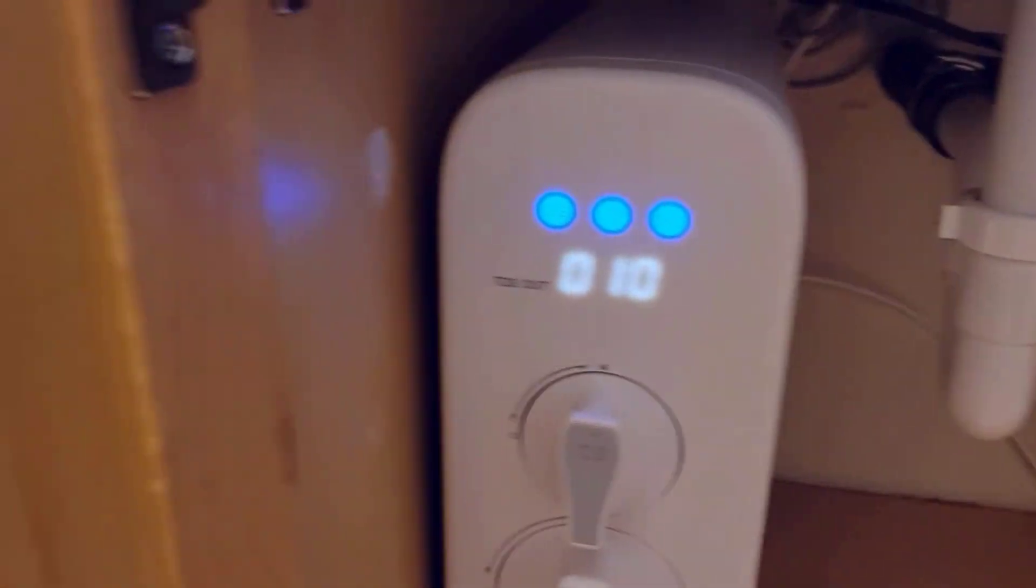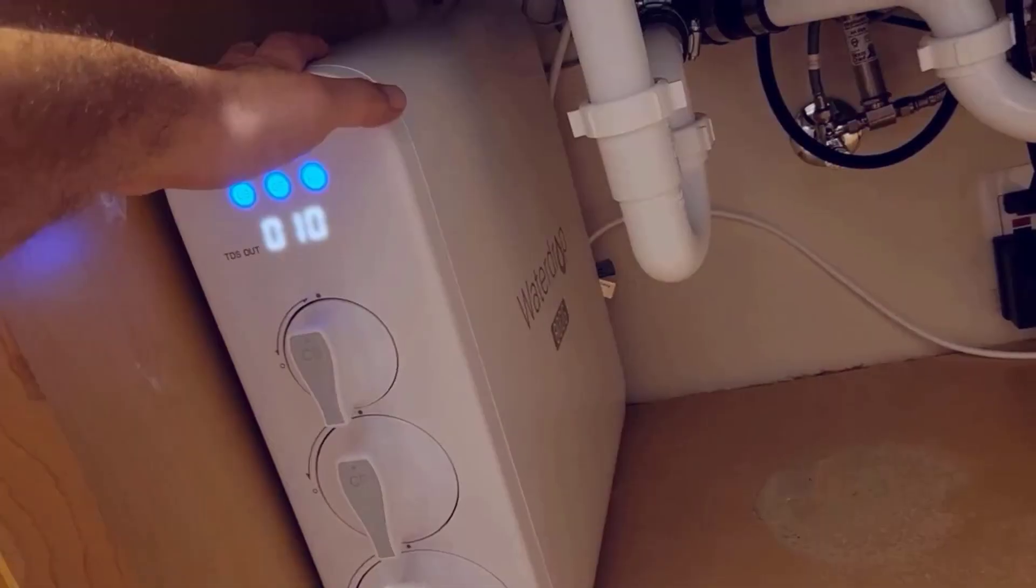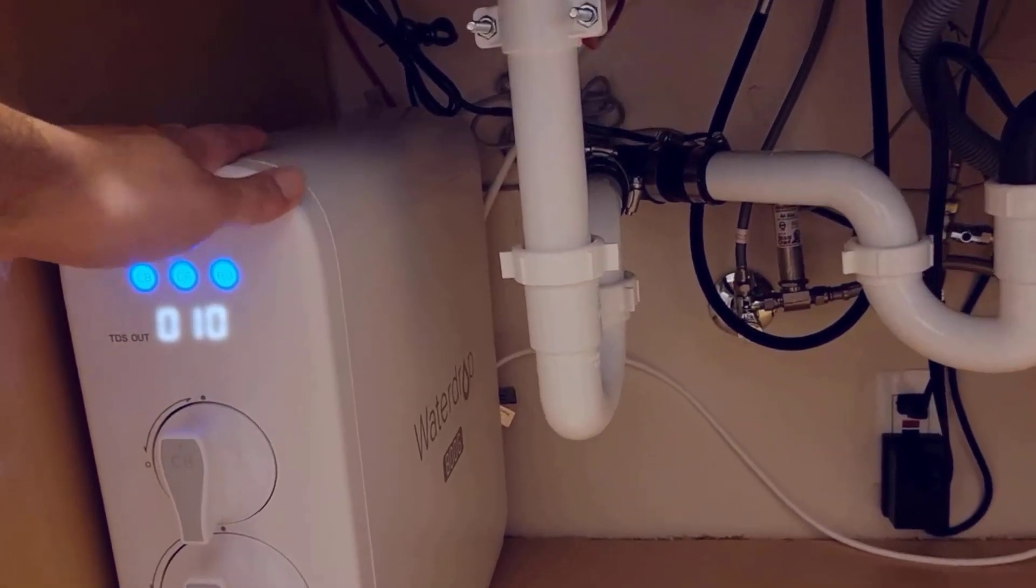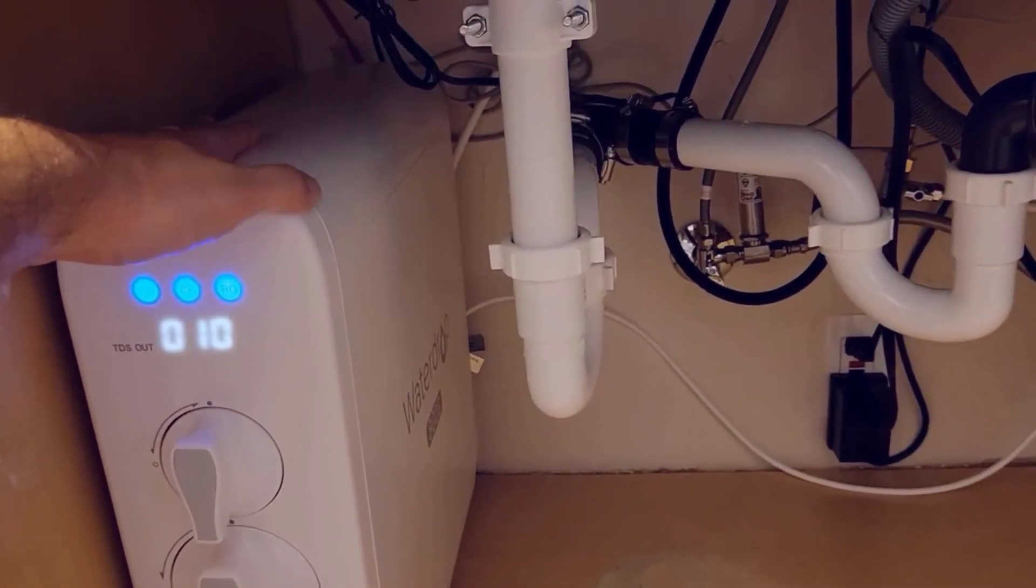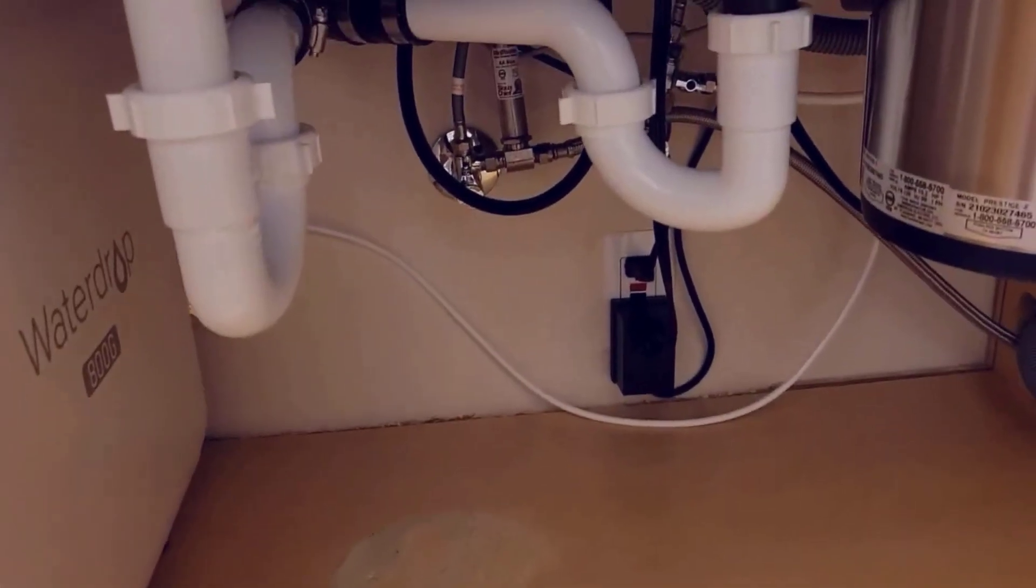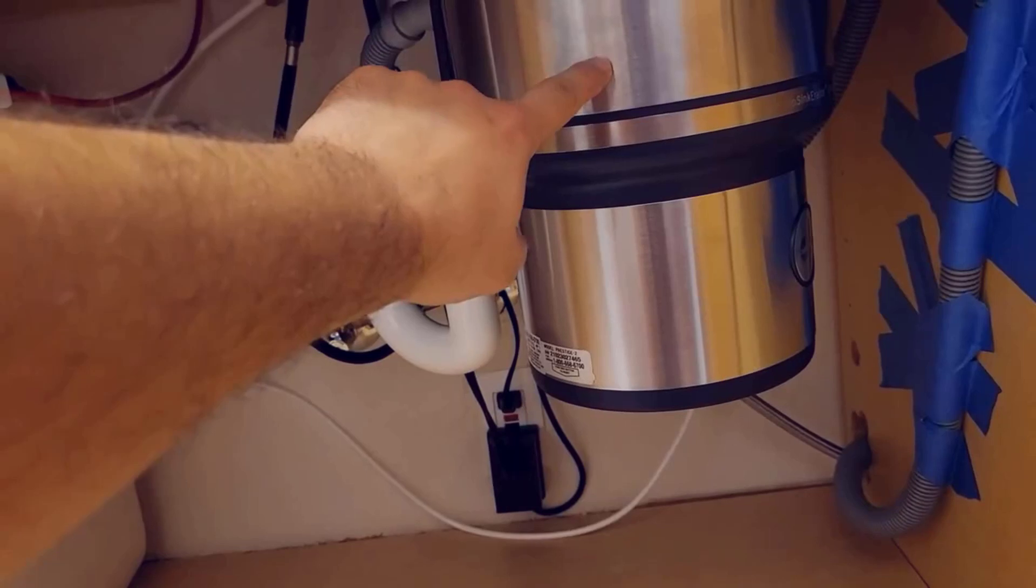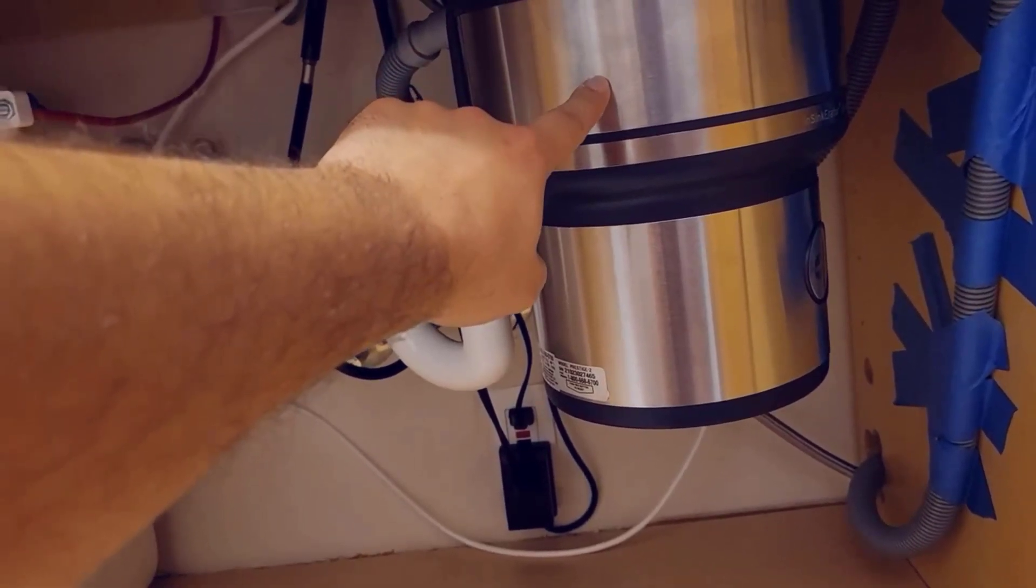Let's talk about the smart features. The Waterdrop G3P800 can be connected to your home Wi-Fi network, allowing you to monitor and control the filtration system from your smartphone. This means you can check the water quality, filter life, and even receive notifications when it's time to replace the filter. It's a fantastic way to stay on top of your water quality.